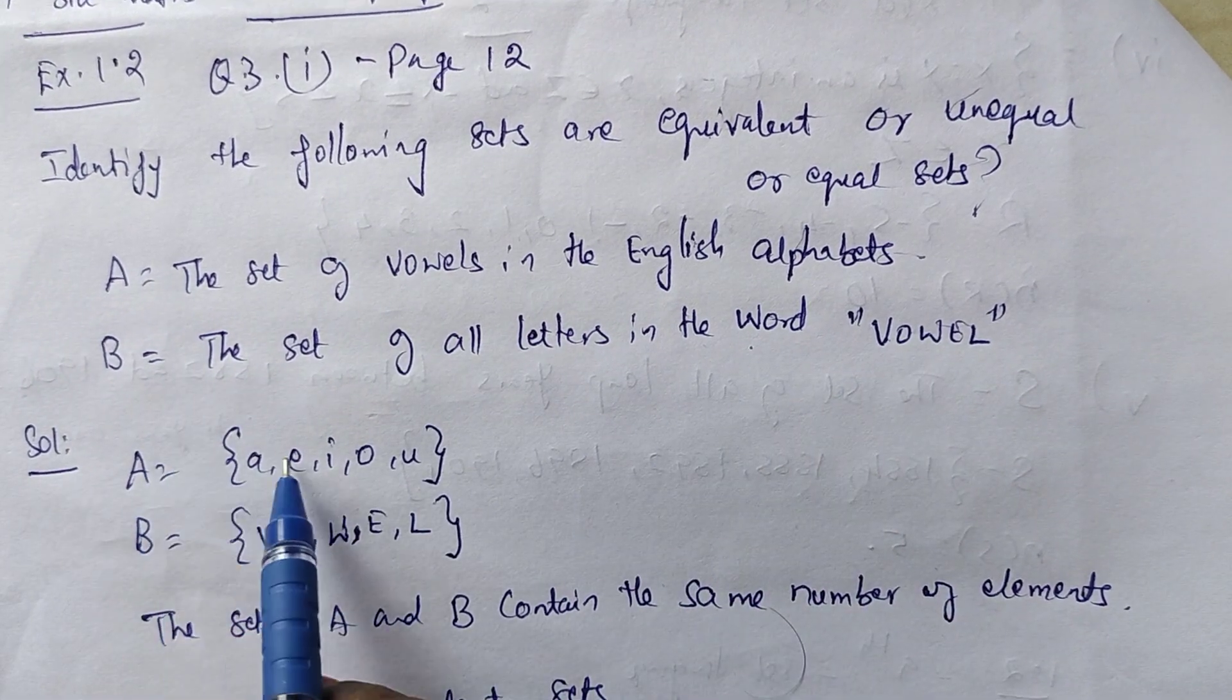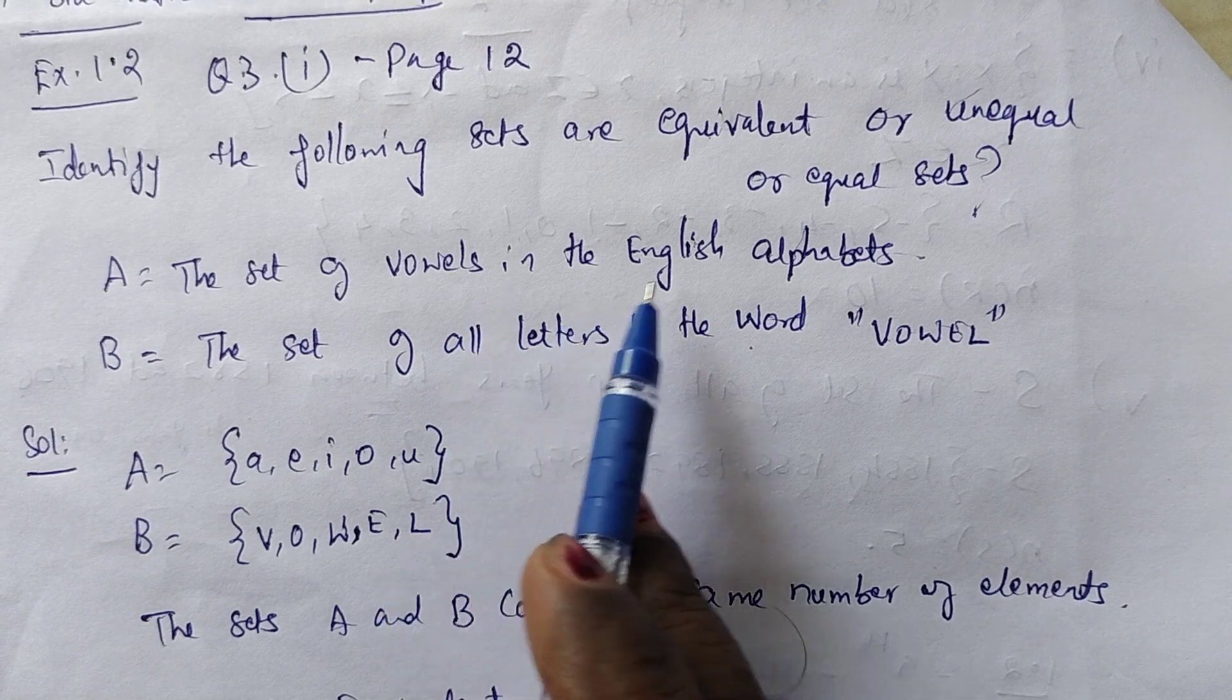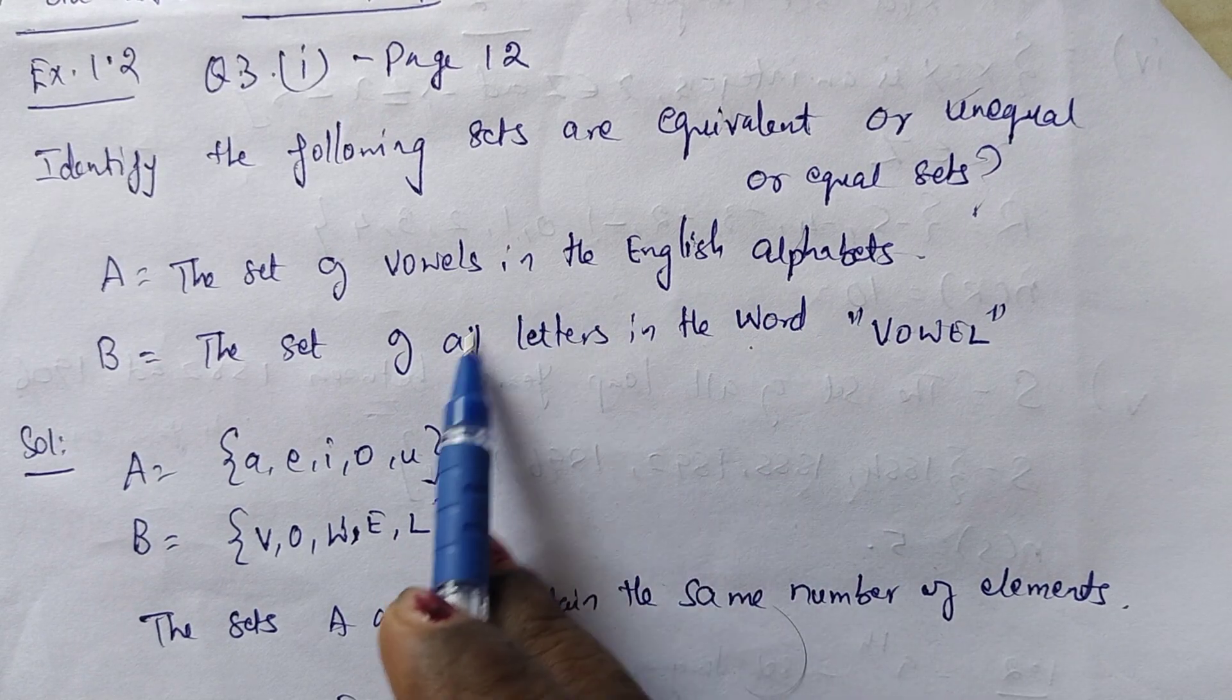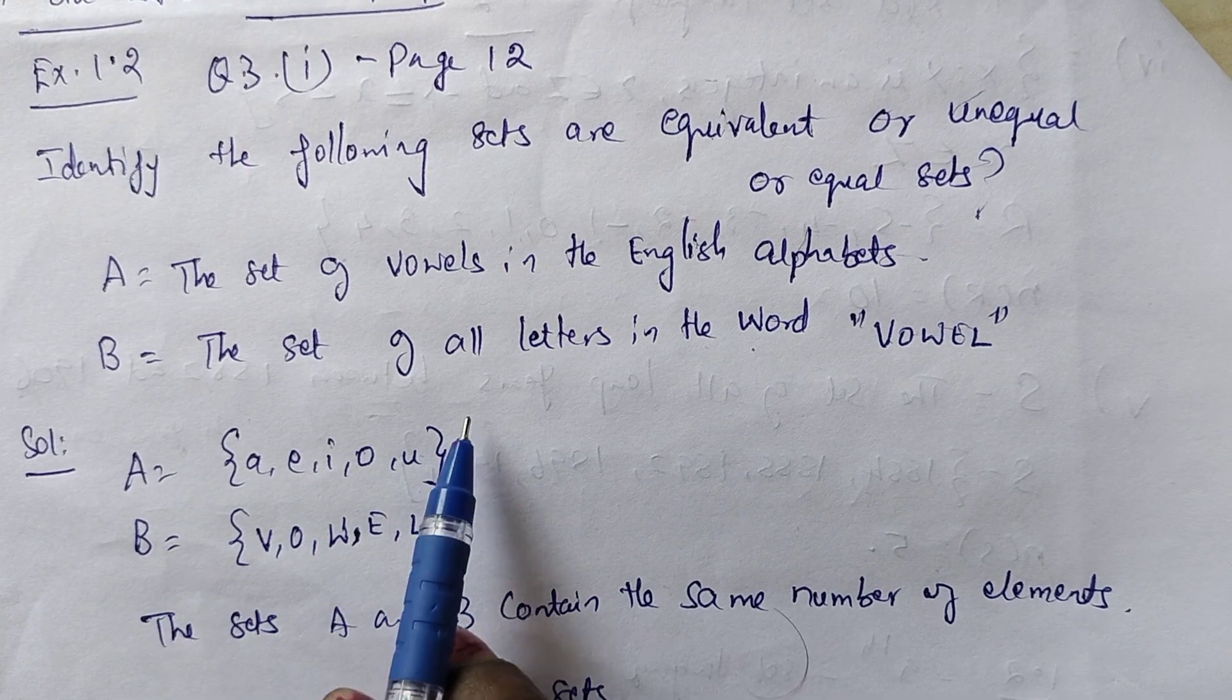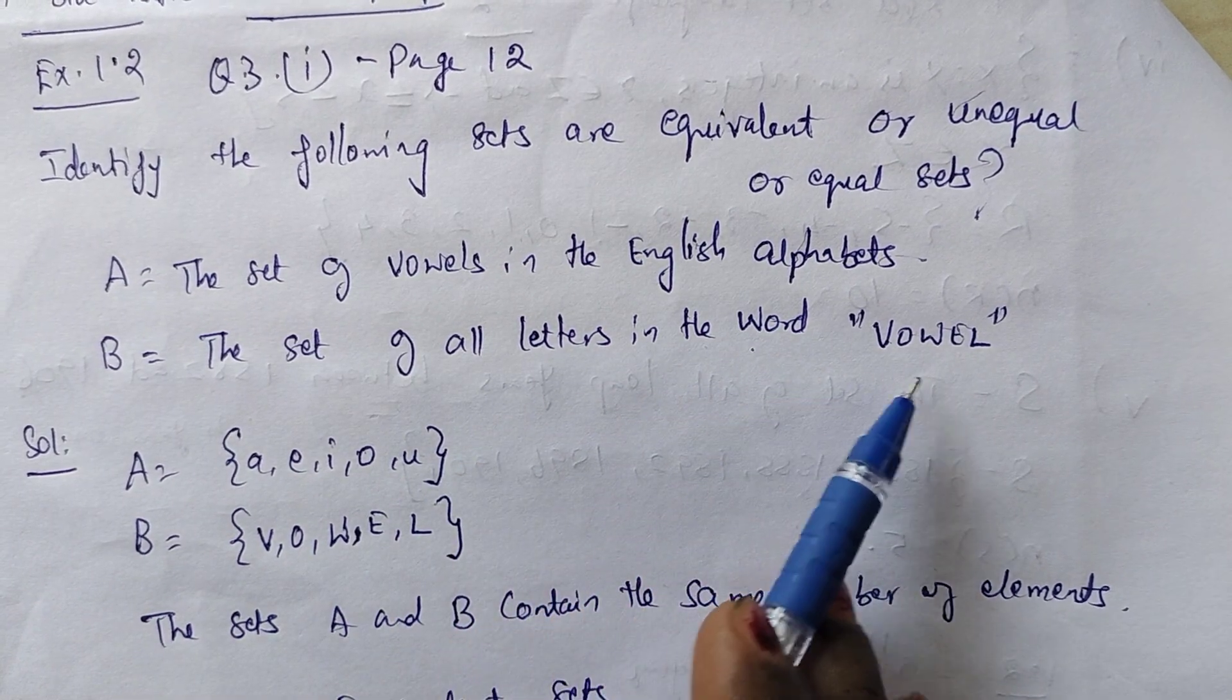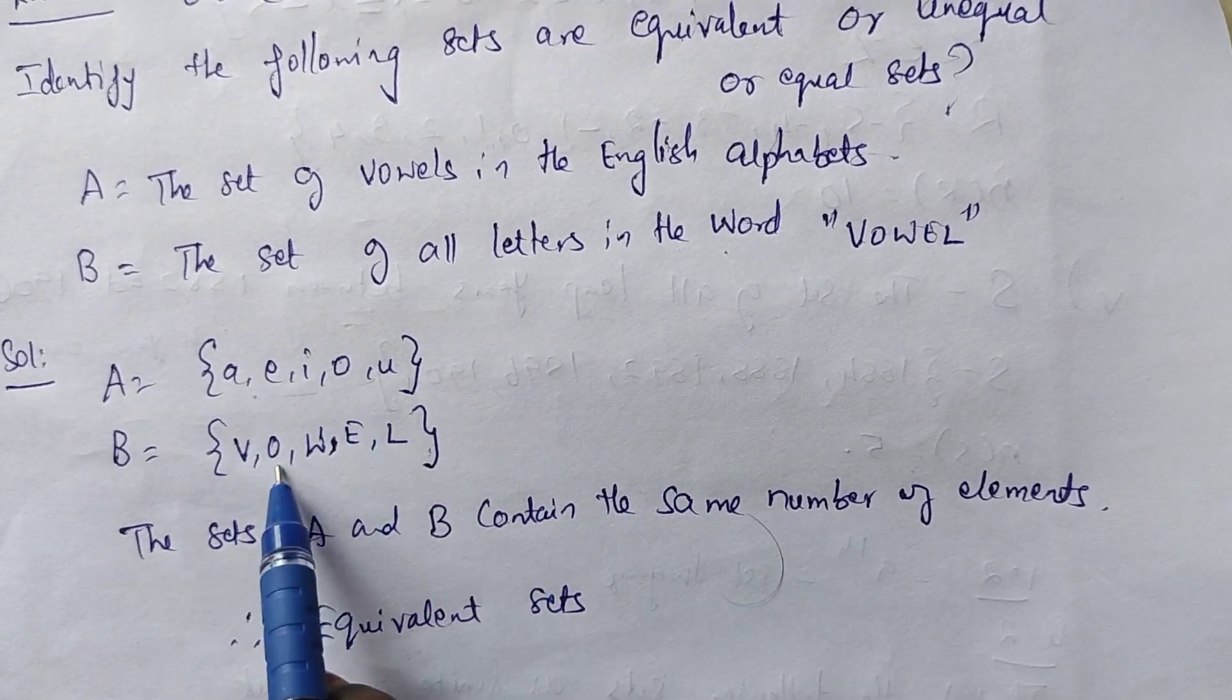A equals the set of vowels in the English alphabets, which are A, E, I, O, U. B equals the set of all letters in the word vowel. So vowel in set brackets. This has 5, this has 5.